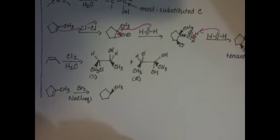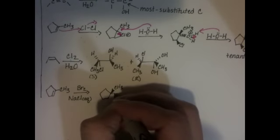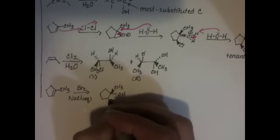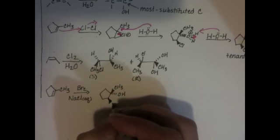A methyl group, which we're just going to default to a wedge position. Put the OH as the dash and the bromine that we've added as the wedge. And we're going to produce the enantiomer of that.